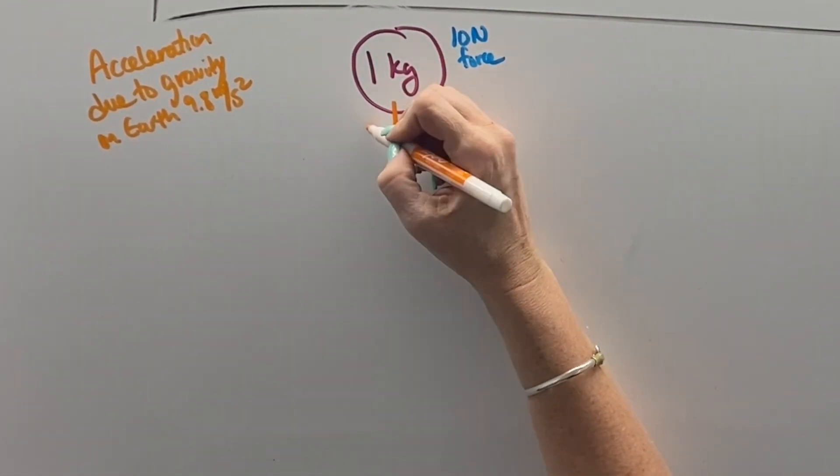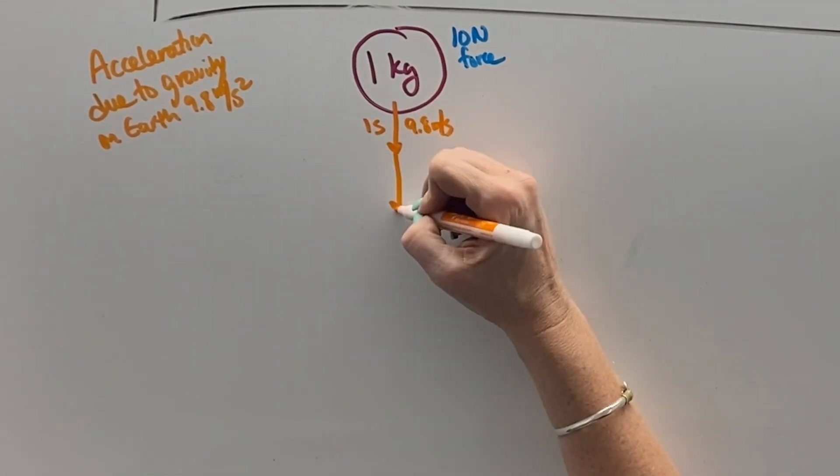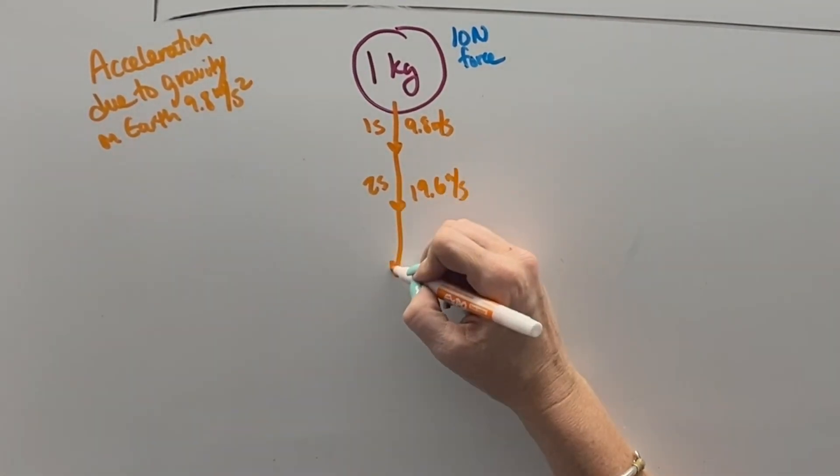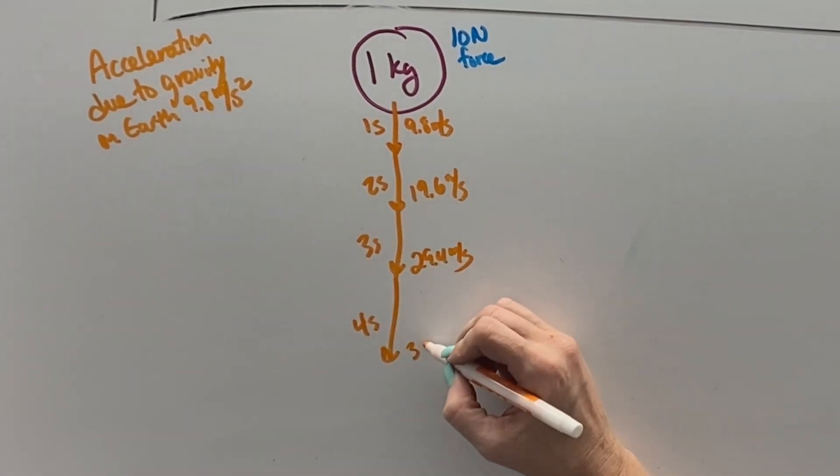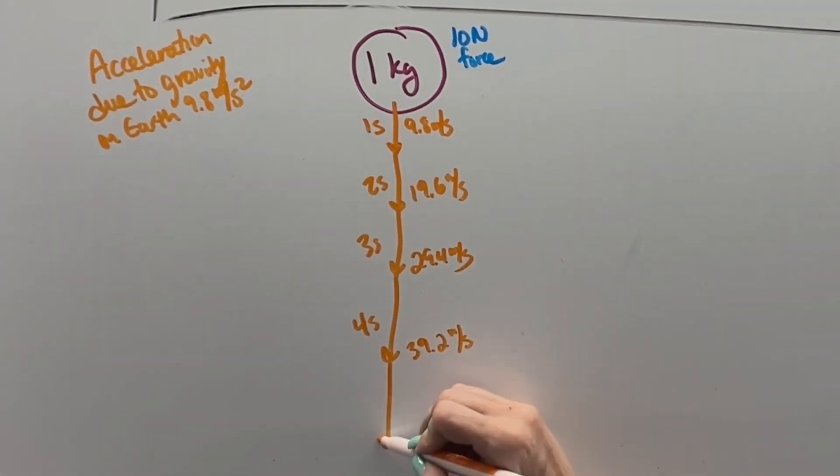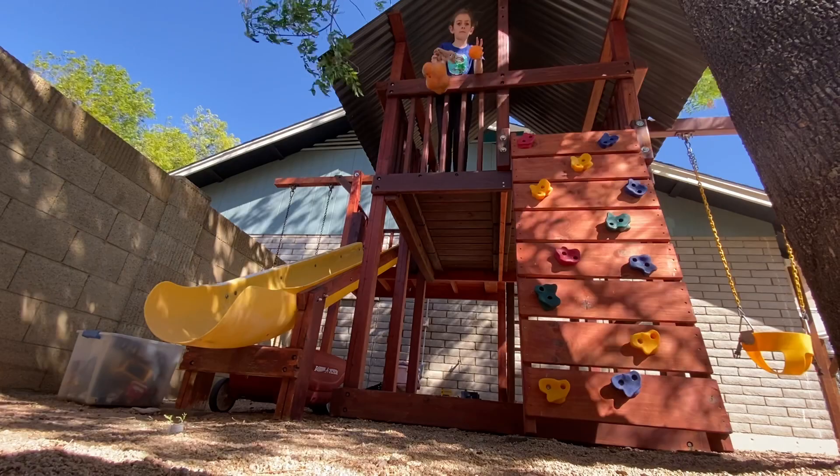9.8 newtons to every kilogram of mass so that it accelerates at 9.8 meters per second every second. So every second it falls 9.8 meters per second faster, and things fall faster and faster, accelerate, that's what that means, as they get closer to the Earth.